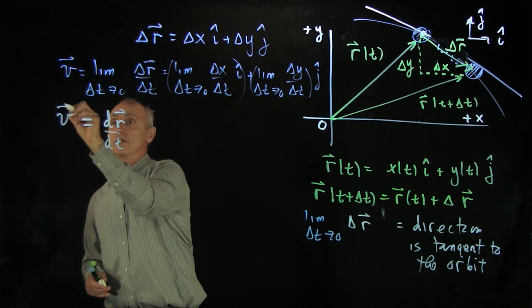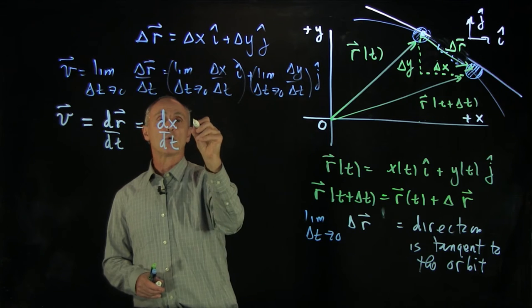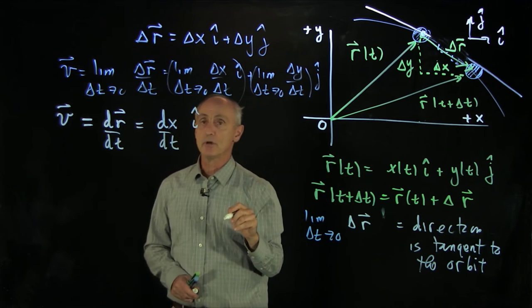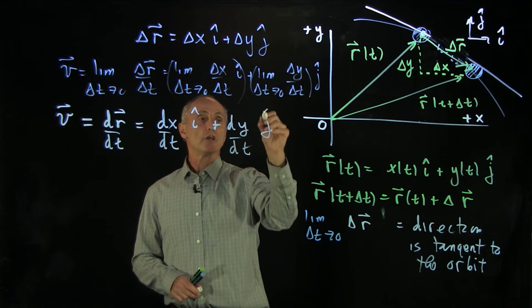So the velocity is dr dt. And that's equal to dx dt, how that coordinate function is changing in time, i hat, plus dy dt j hat.